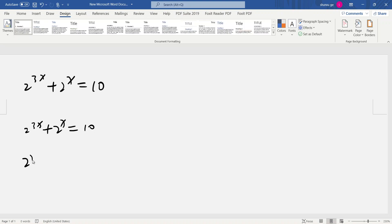So 2^x times 3 plus 2^x equals 10. Rewrite: 2^x(2^(2x) + 1) equals 10, so 2^x times 2^(2x) plus 2^x equals 10.